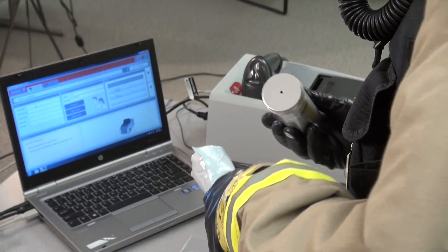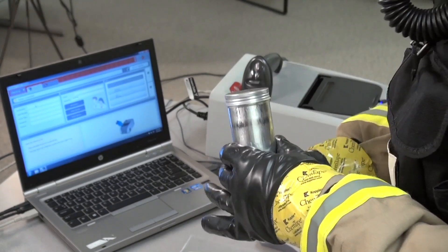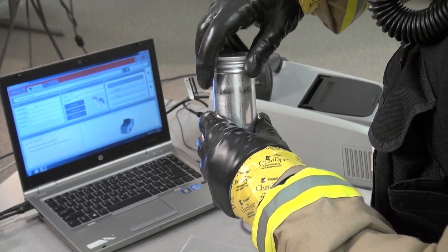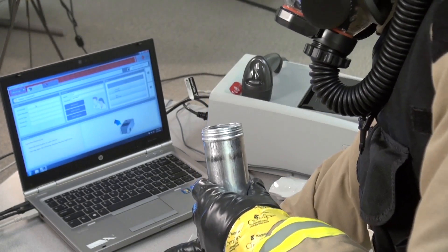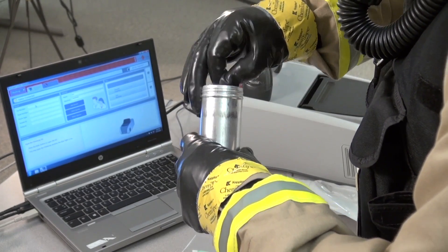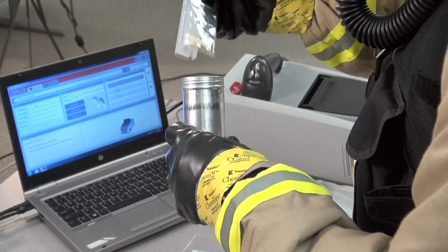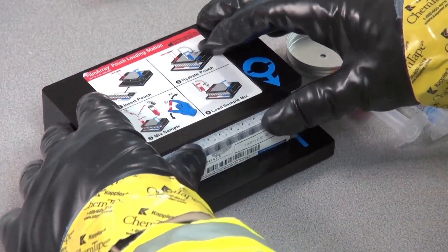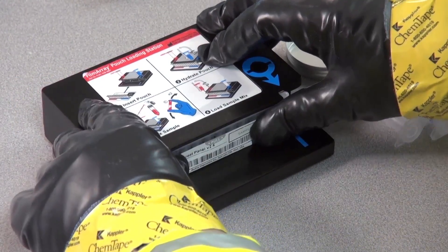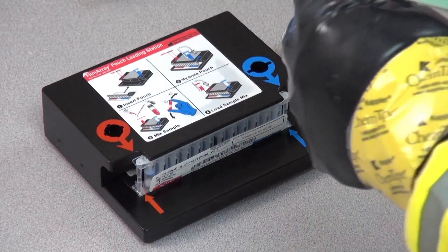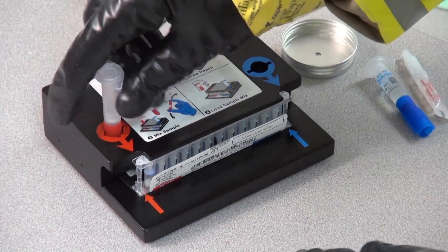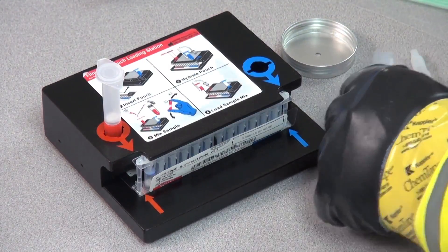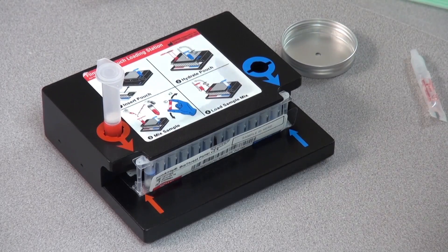To begin, remove the pouch from its packaging. Insert the pouch into the loading station. Place the sample injection vial into the red well of the loading station and the blue hydration vial into the blue well.